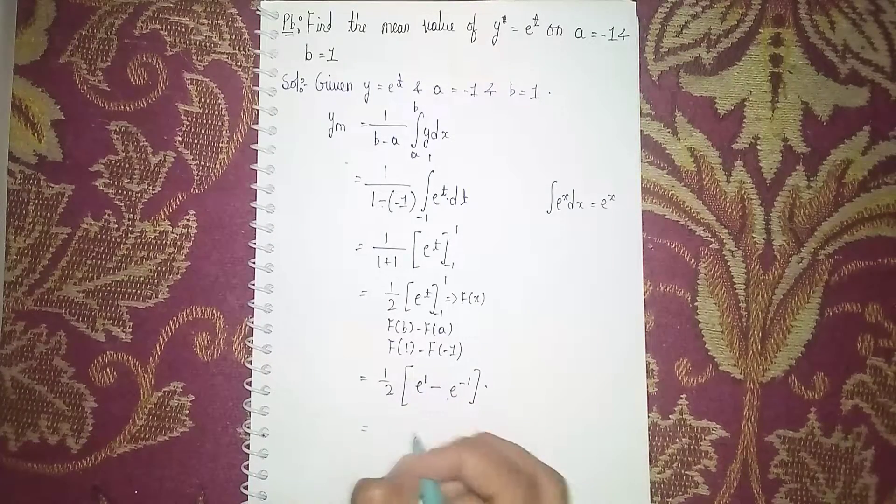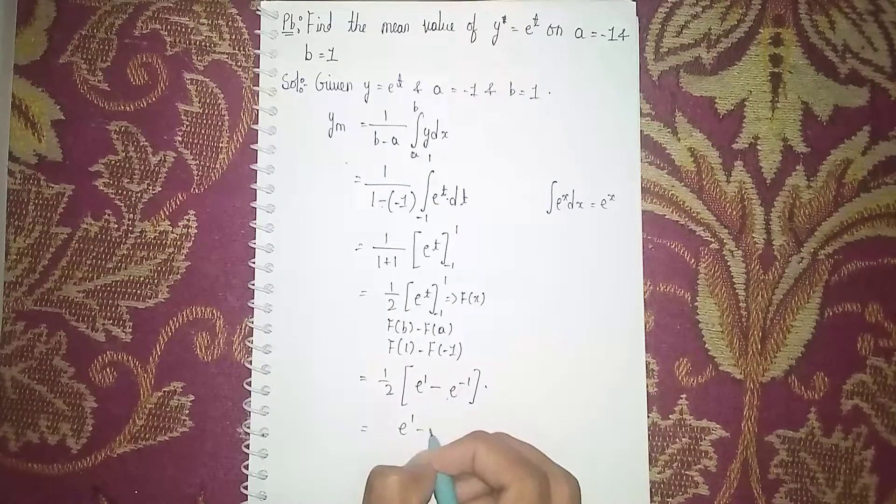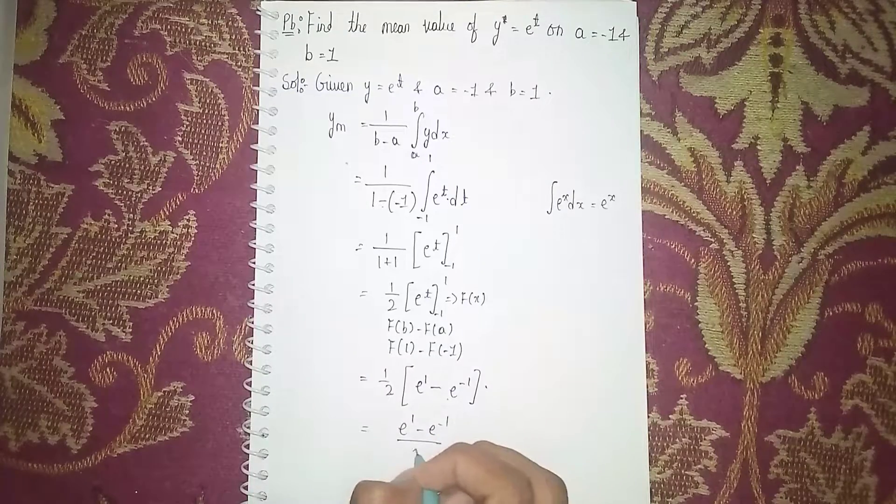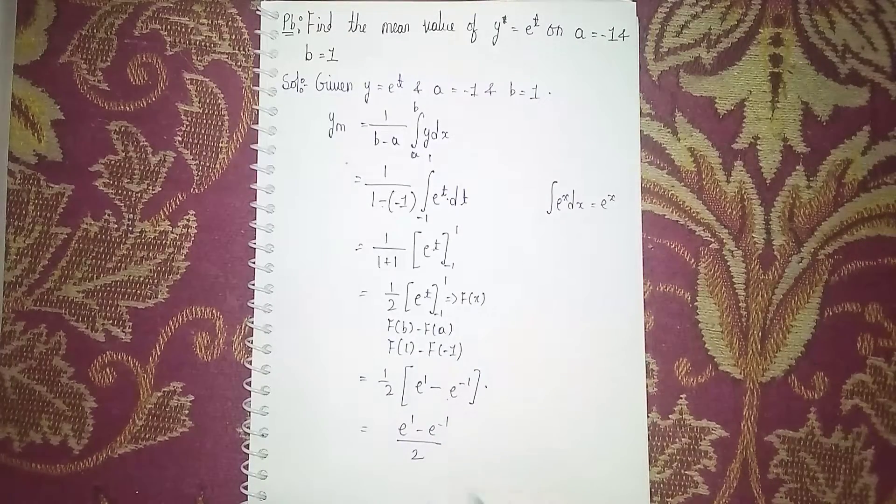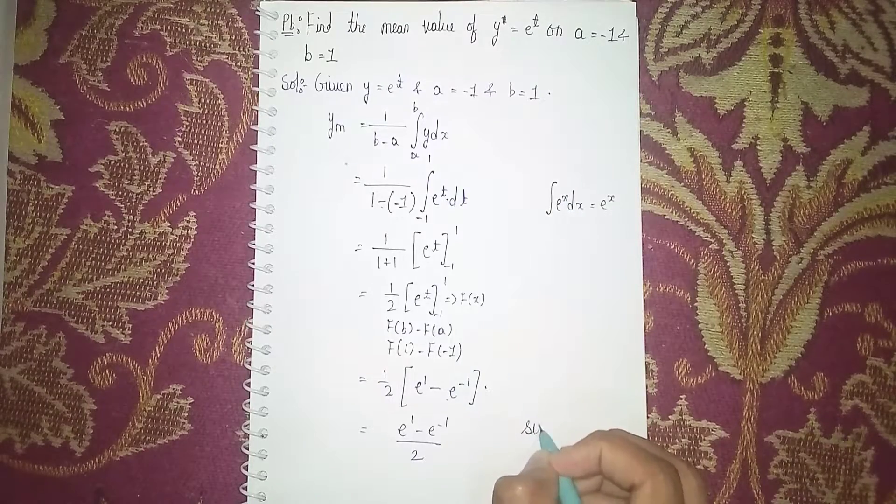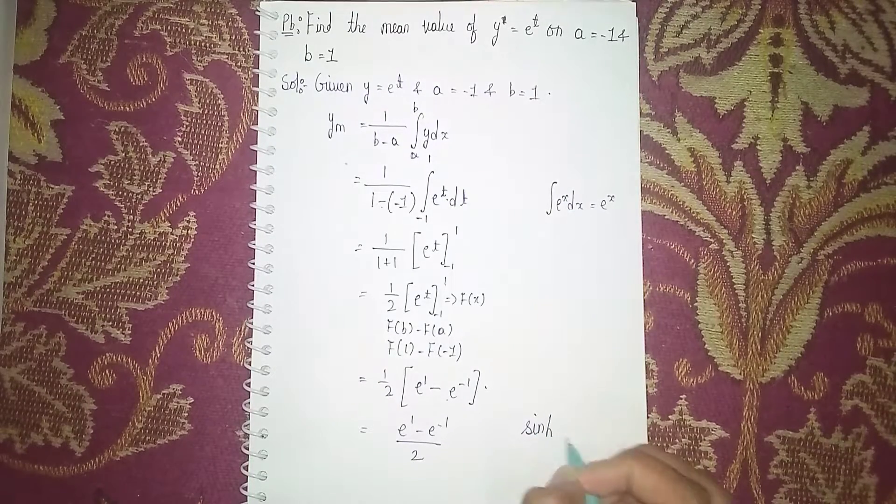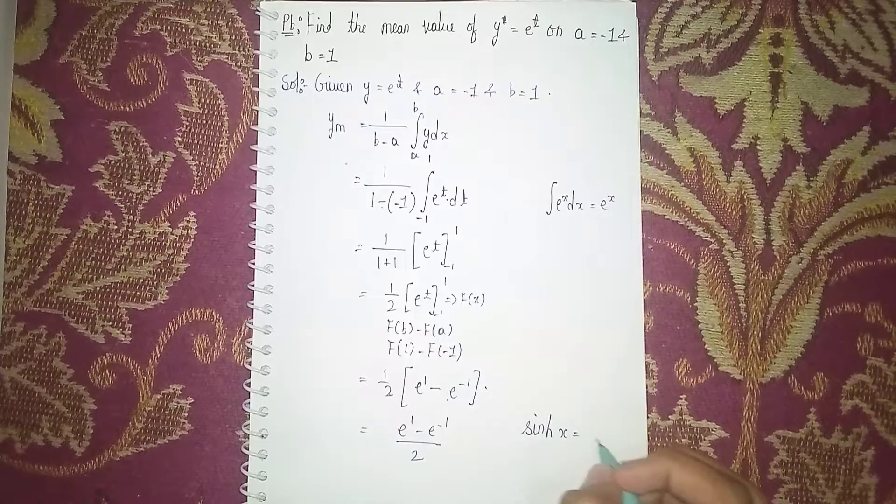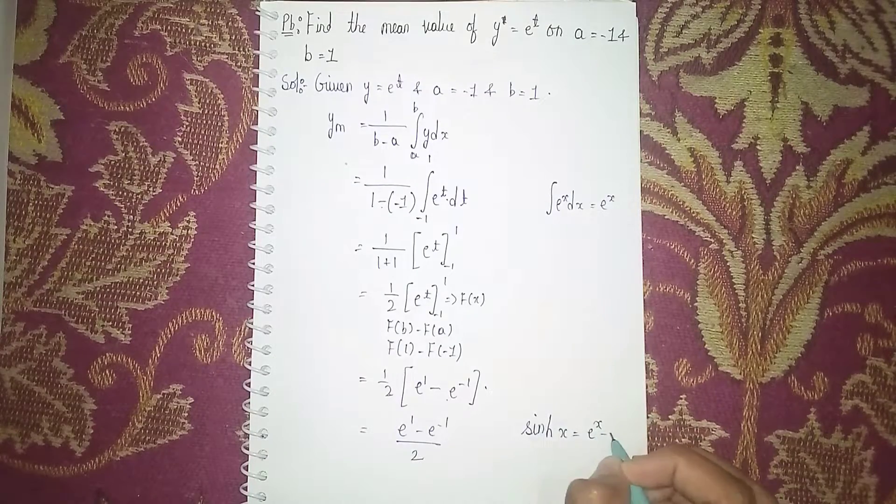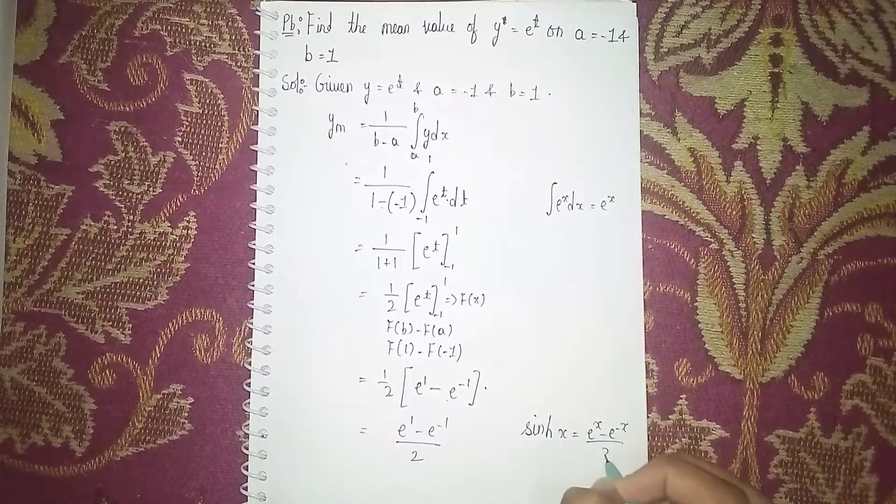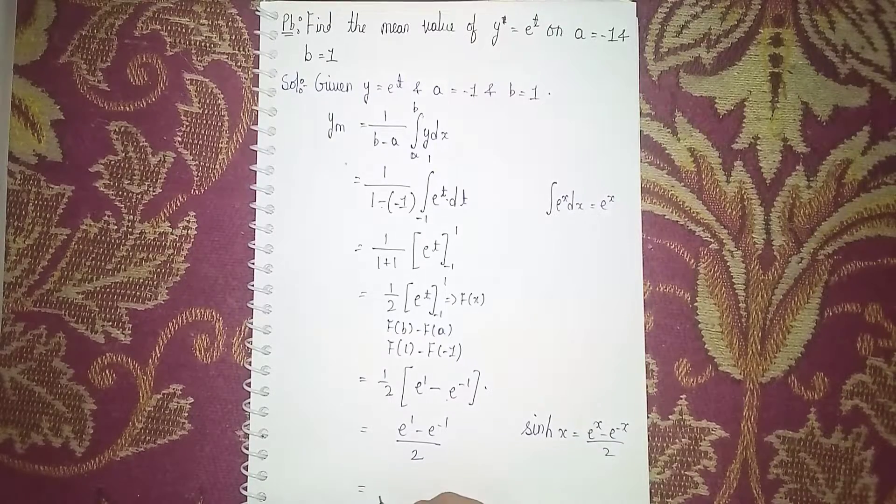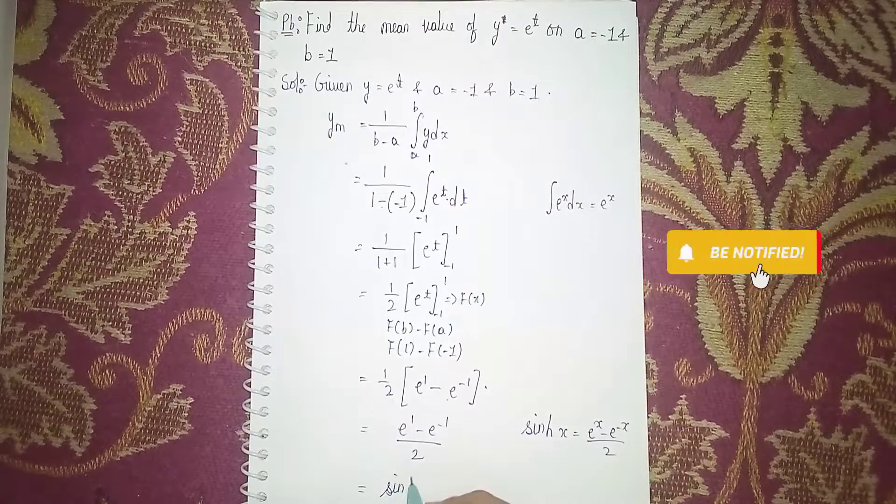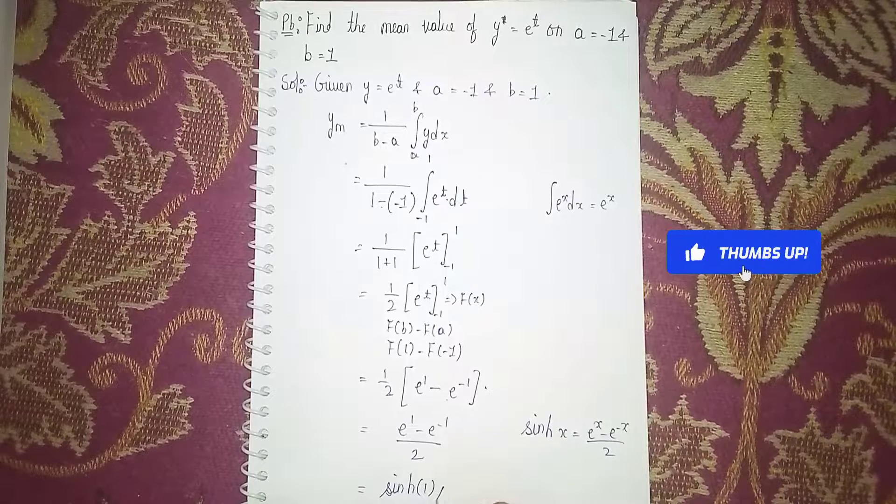Now it is in the formula of sinh x. sinh x is equal to e power x minus e power minus x, all by 2. That is the formula. So here it becomes sinh 1. This is our answer. Thanks for watching.